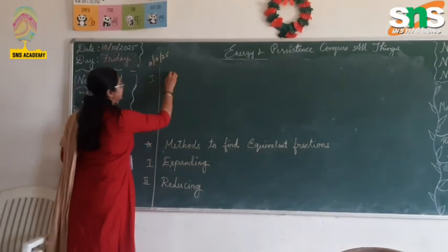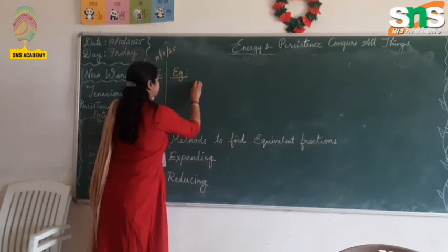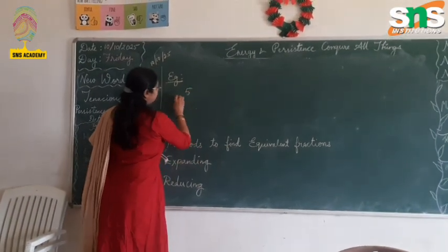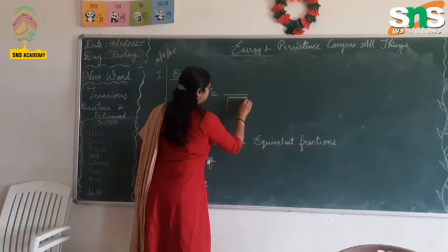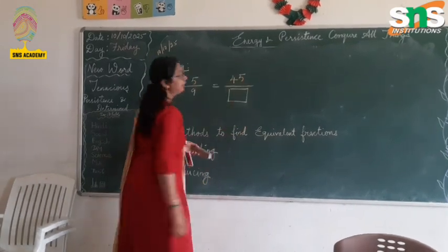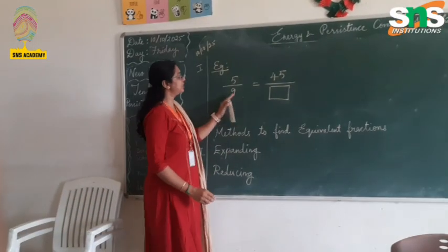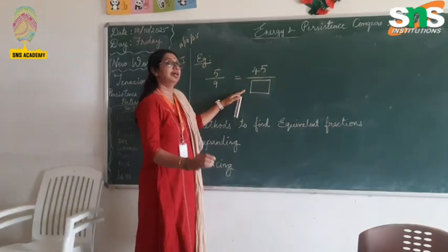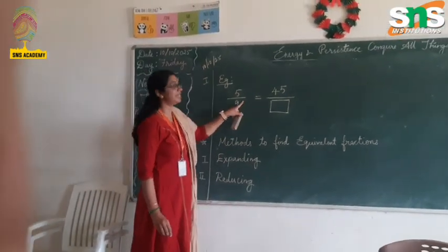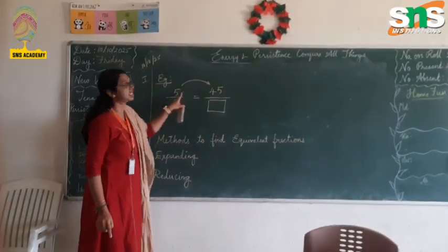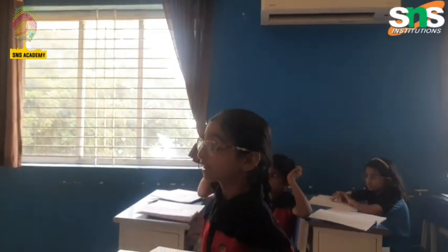First method: Expanding. Example: 5 by 9 is equal to 45 by box. Here, the given fraction is 5 by 9 and the equivalent fraction is given as 45 by box. You can see this is expanded because 45 is more than 5, so it is expanded. How did you get 45 in the numerator? When 5 is multiplied by 9, we get 45.